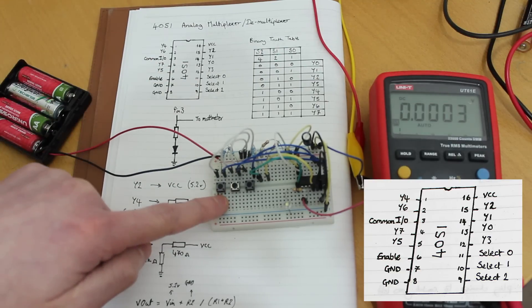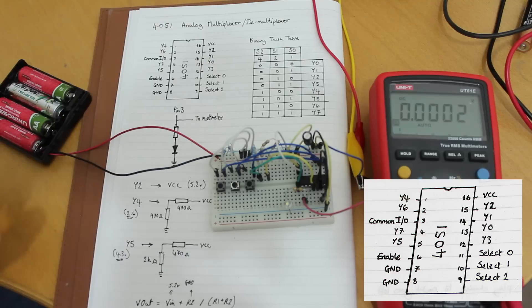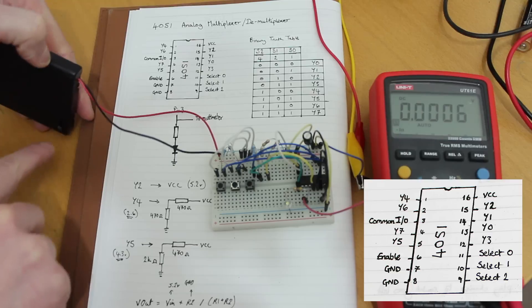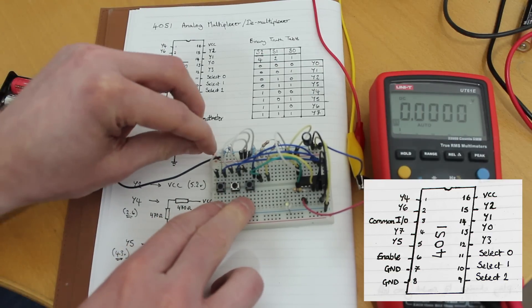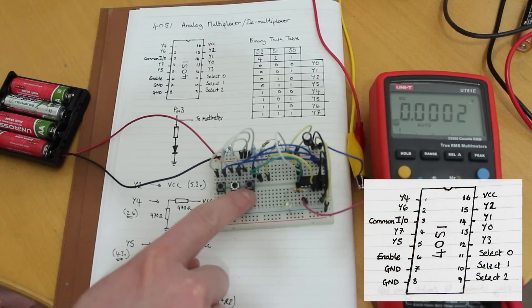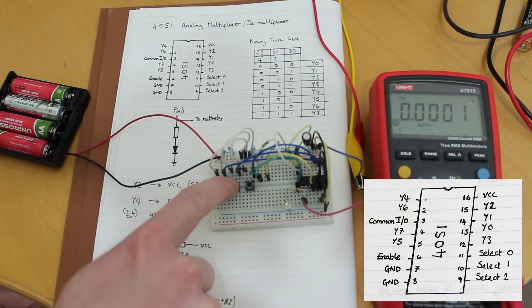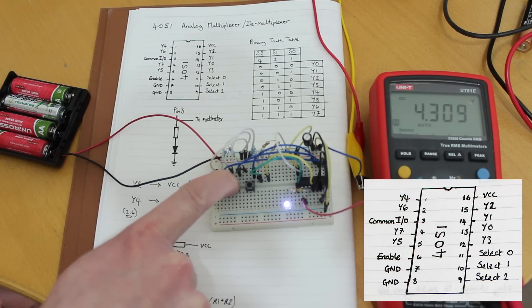And on our select pins, I've put some buttons so that we can ping out this truth table and select the ones that we want to see. So if I just turn the power on, we've got one on Y2 and it goes 1, 2, 4. So if I press the second one, it should give us the highest voltage.